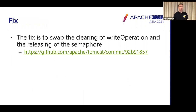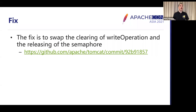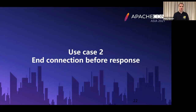The fix was quite simple — just a case of swapping the instructions in the completion handler. Now what happens is thread one first clears its operation state, then releases the semaphore. That releases the next thread, which obtains the semaphore and stores its operation state in the write operation field. That won't then be overwritten because we've switched the order of releasing the semaphore and clearing the state. So that was the first use case.